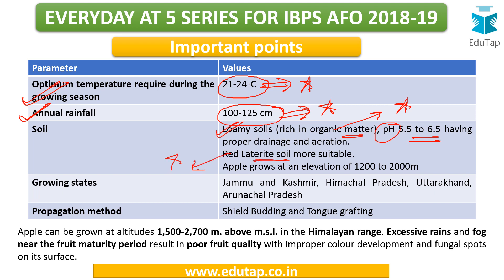The major apple-growing states in India: Himachal Pradesh is known as the apple bowl of India. Then Jammu and Kashmir — Kashmiri apples are very famous. Then Uttarakhand and Arunachal Pradesh. These northeastern areas are included because apple requires a certain elevation of 1200 to 2000 meters.